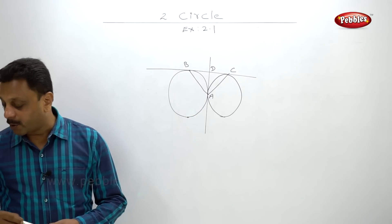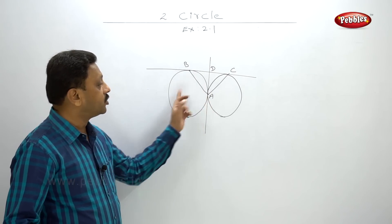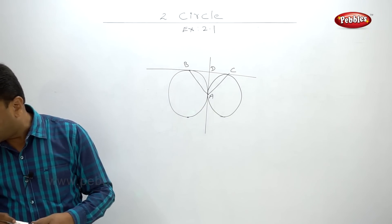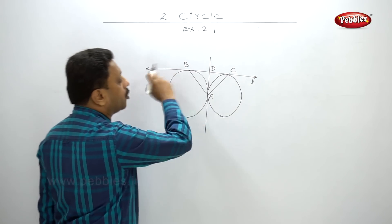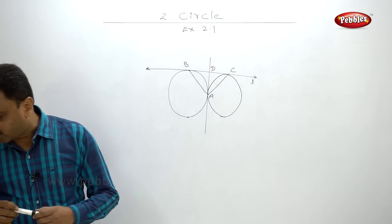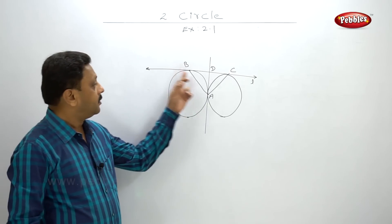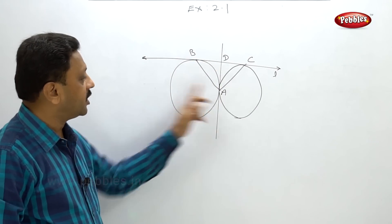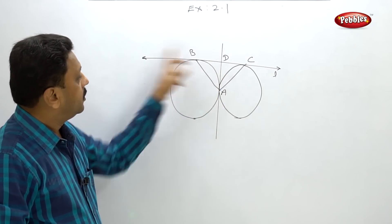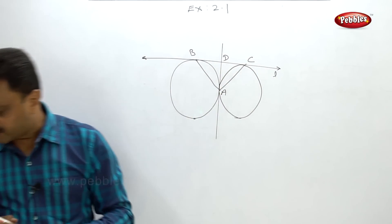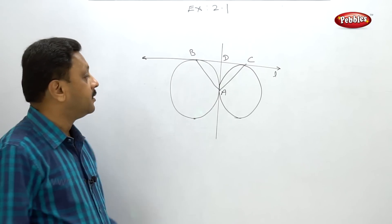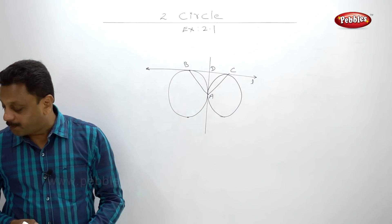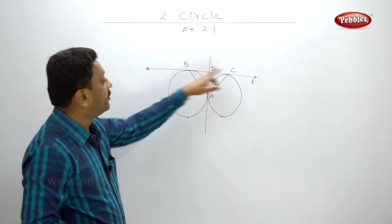In the figure, point A is the common point of contact of two externally touching circles. Line L is a common tangent to both circles, touching them at points B and C. A vertical line is also a common tangent to both circles at point A and intersects line L at point D. We have to prove that angle BAC equals 90 degrees and that D is the midpoint of BC.